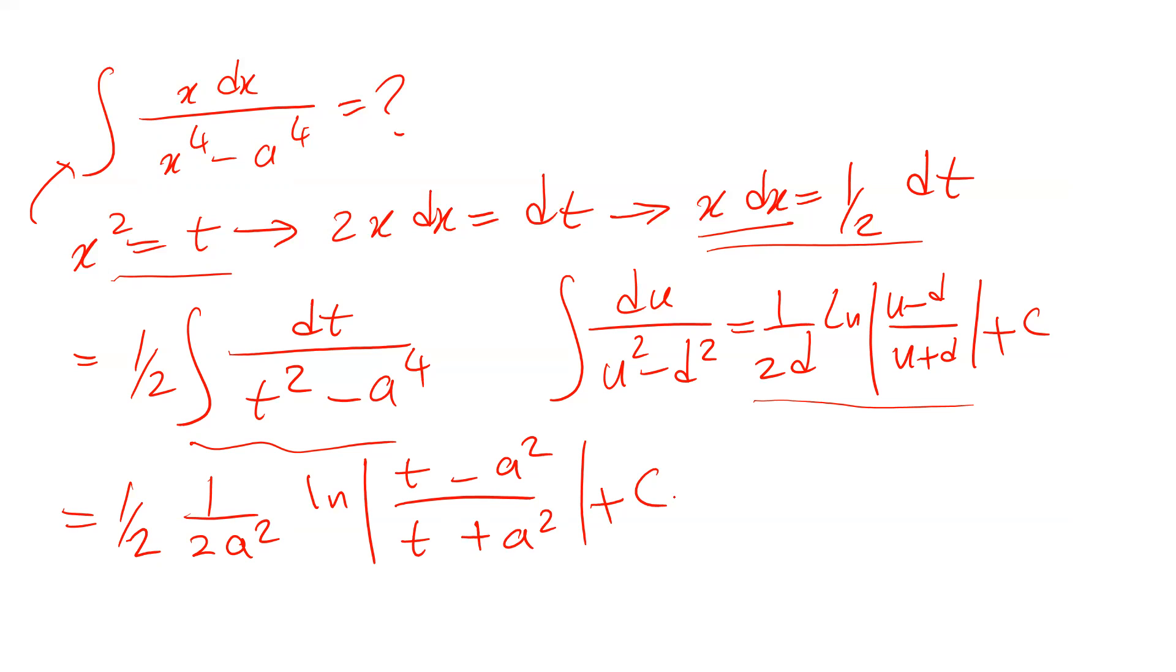So here all you need to do is to basically substitute the parameter t here with the definition of t, which is equal to x². Therefore, you can write it as 1/(4a²) ln, and instead of t, I write the definition of t, that is |x² - a²|/|x² + a²| + c.